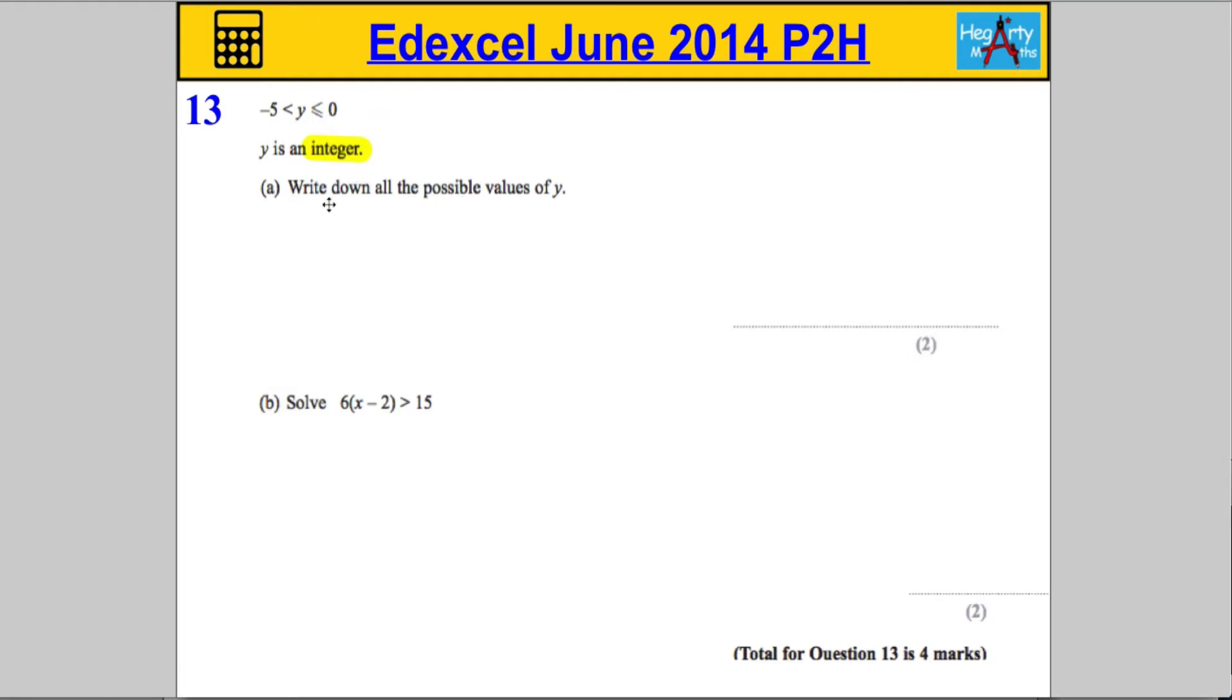We're asked to write down all possible values of y. You might be able to read it off straight away. I'm going to do a little number line to try and help us out. We know that the inequality goes between negative 5 and 0. So, let's start with, say, negative 6 and go up to 1.